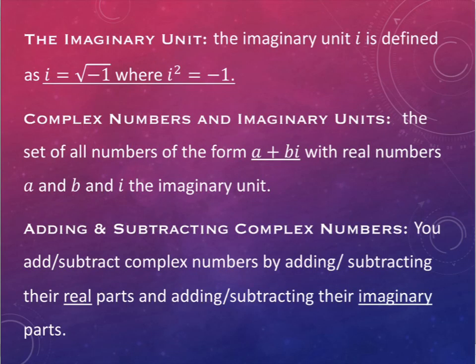An imaginary unit is the unit i, and it is defined to be the square root of negative 1. An alternate definition is that i squared is equal to negative 1. So those are the same statement,